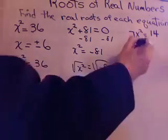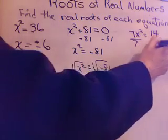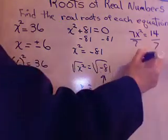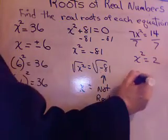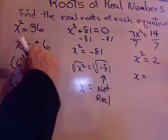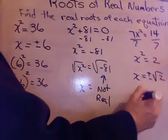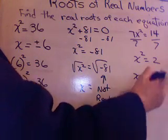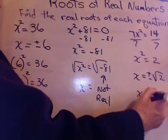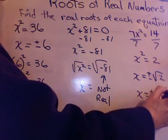How about this problem? Let's divide by 7 first. So x squared equals 2. x equals plus or minus the square root of 2. x equals, oh dear, I can't do the square root of 2. Leave it in the radical sign.